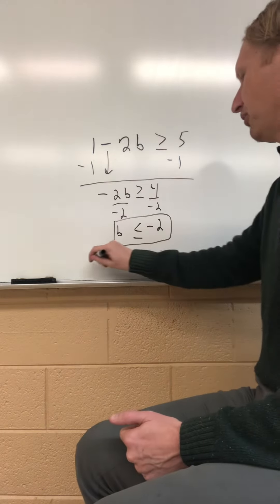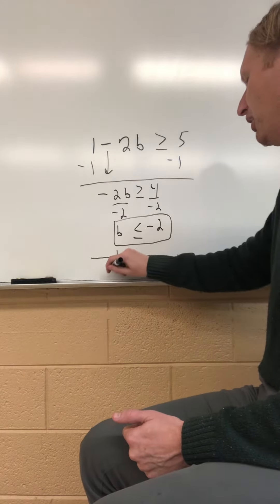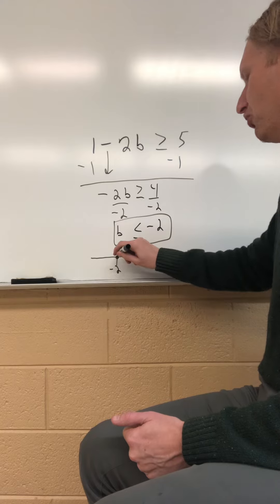Now if you're asked to graph this, and sometimes we are, you will use a closed circle at negative 2. And then you will shade to the left.